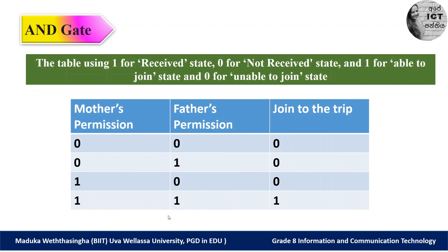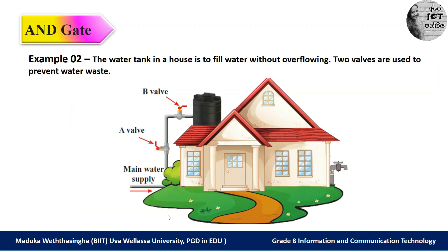In the second situation: you didn't receive the mother's permission (zero) but got the father's permission (one) — you cannot join, output zero. Third situation: got the mother's permission but not the father's permission — unable to join. Last situation: you got both permissions — you are able to join, output one. This completes the example for AND gates.